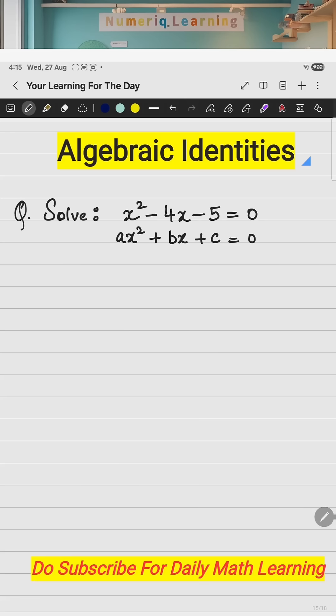So, just compare it. If you don't have any coefficient of x², it means it is 1. So, what is a here? A is 1. What is the value of coefficient of x? It is minus 4. You have to be careful about the sign. And what is c? c is minus 5.